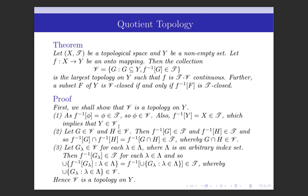Next we show that the intersection of any two members of V is also in V. Take two members G and H in V, so F-inverse of G belongs to T and F-inverse of H belongs to T. Since T is a topology on X, the intersection of any two members of T is also in T. So F-inverse of G ∩ F-inverse of H equals F-inverse of (G ∩ H), and this belongs to T. So by the definition of V, G ∩ H belongs to V.